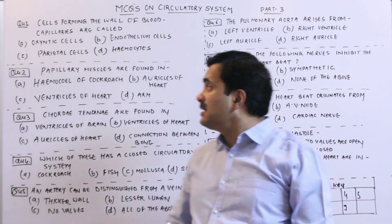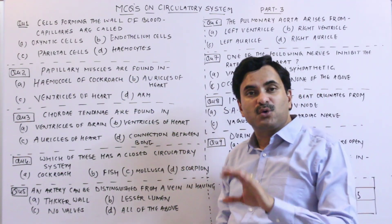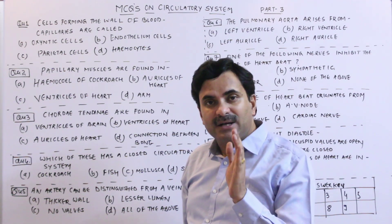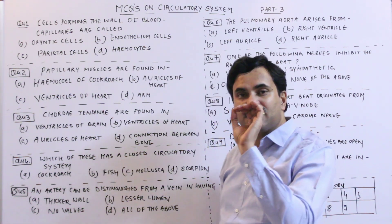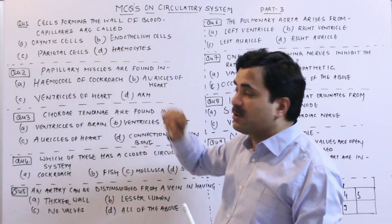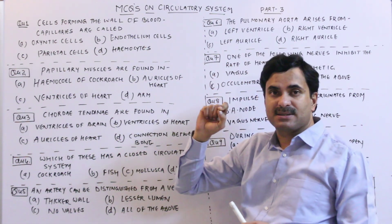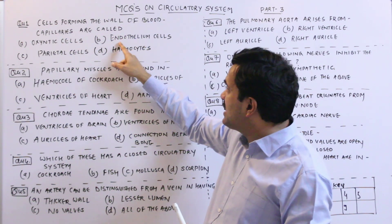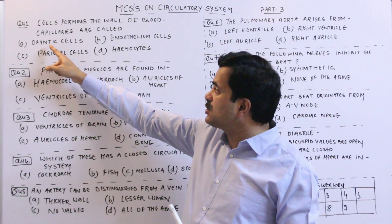The first question is: cells forming the wall of blood capillaries are called? You know very well that out of the three types of blood vessels — arteries, veins, and capillaries — capillaries are the thinnest blood vessels. The options are: oxyntic cells, endothelium cells, parietal cells, and hemocytes.